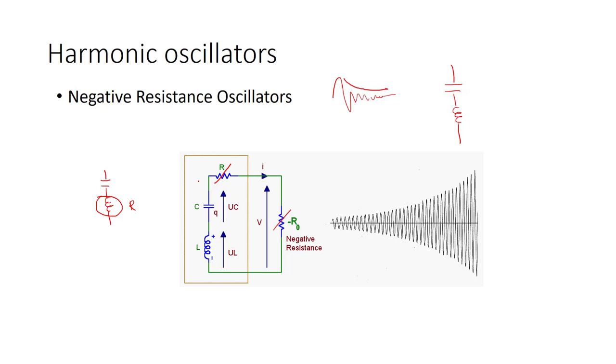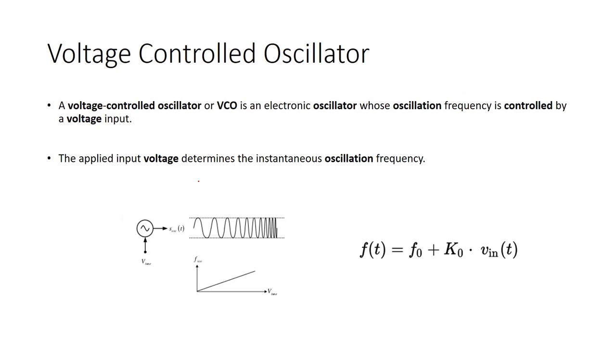The last section is voltage controlled oscillator. A VCO is an electronic oscillator whose oscillation frequency is controlled by a voltage input. Sometimes we have to control the frequency. For example, we want to use our oscillator in a wideband range, so we have to produce different frequencies. Then we use a voltage controlled oscillator.